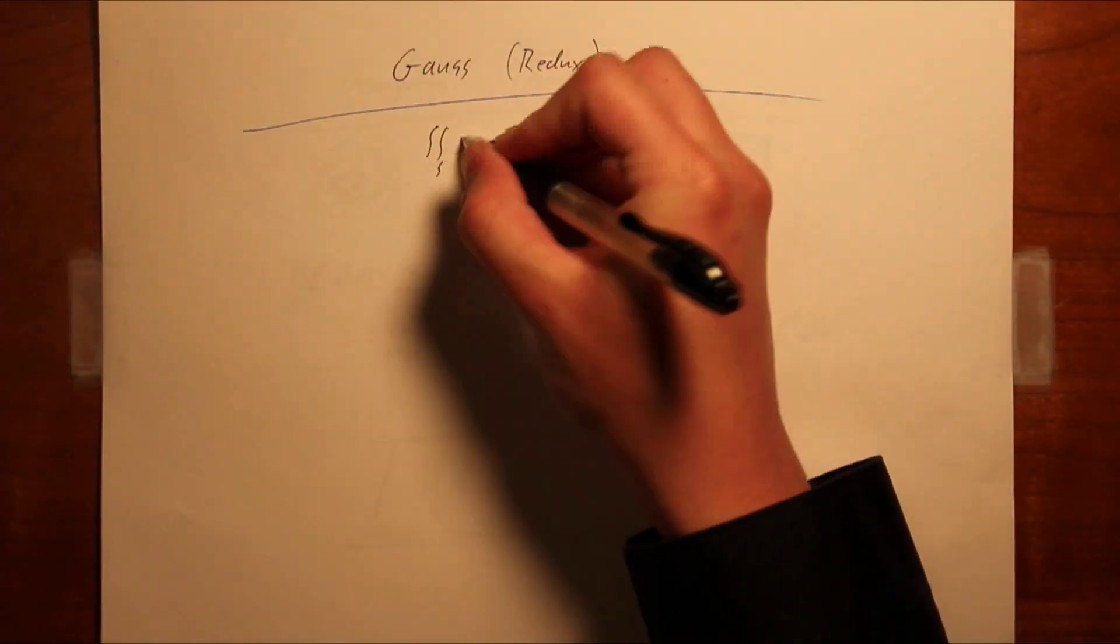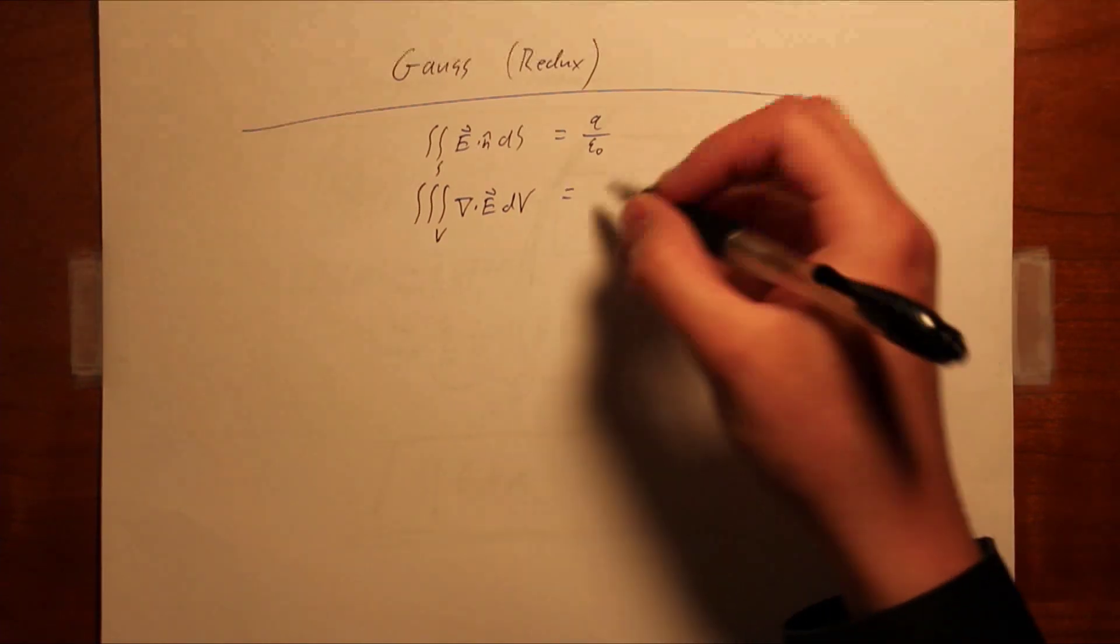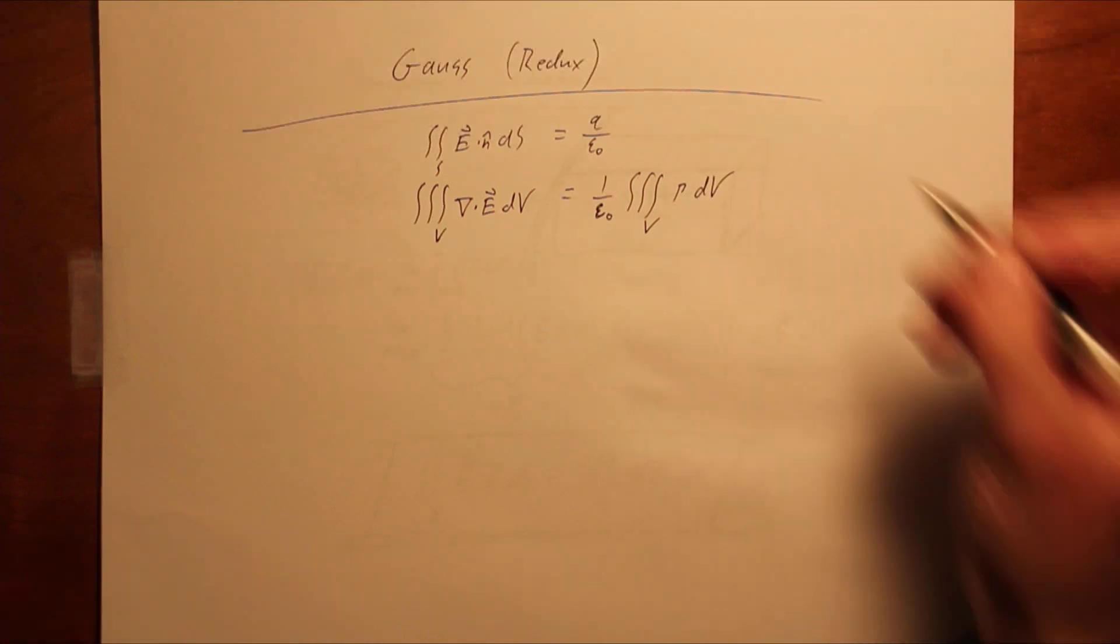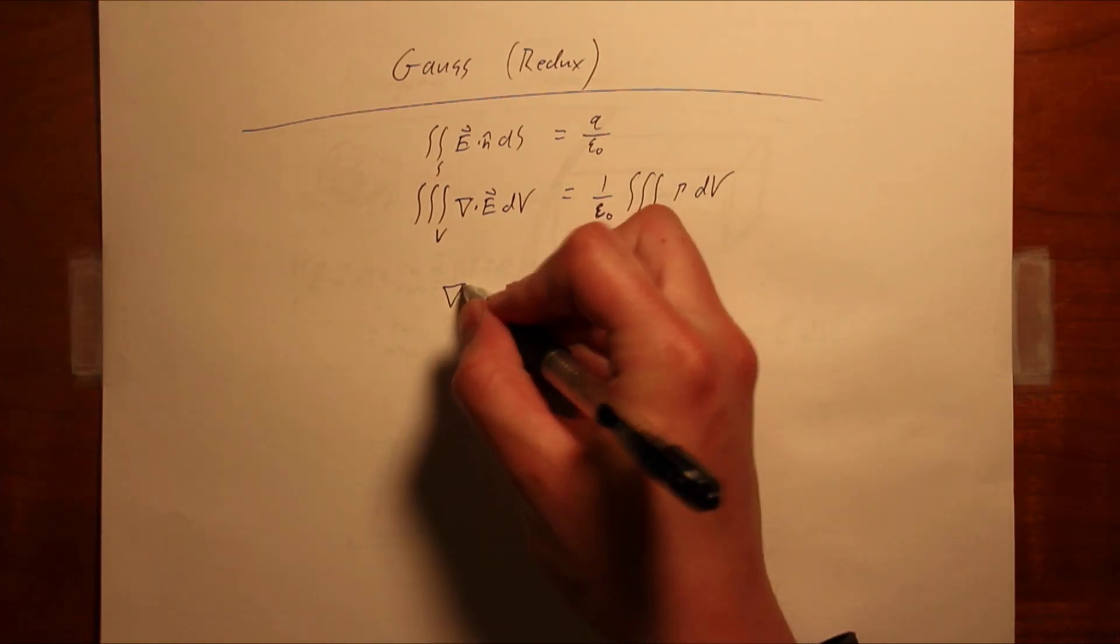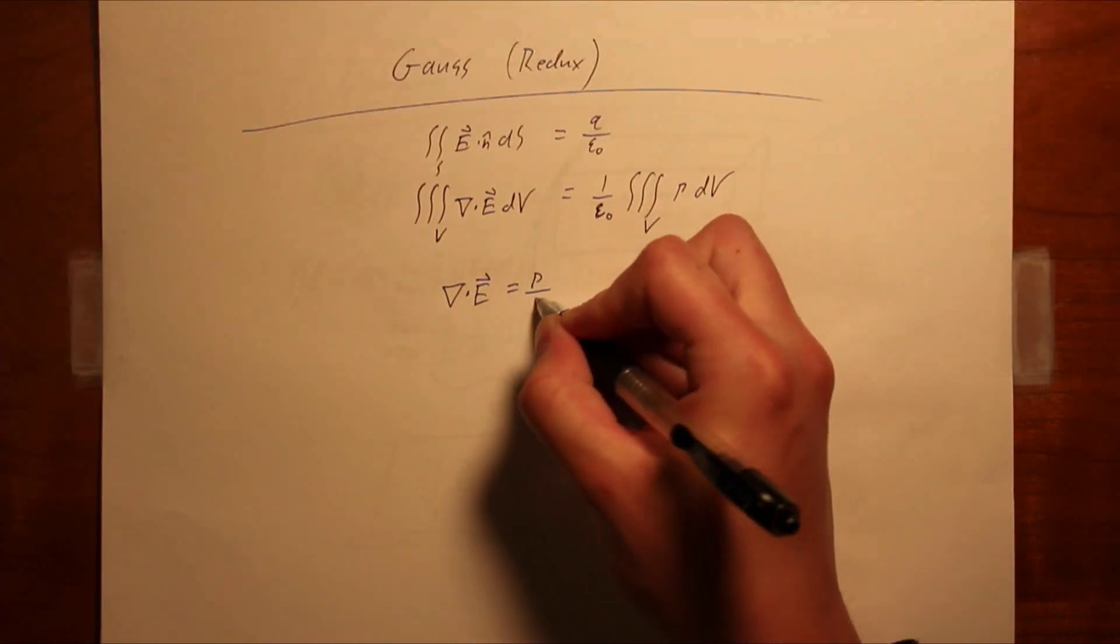The divergence theorem can be applied to the surface integral in Gauss's law. The right-hand side of Gauss's law can also be converted into a triple integral by considering the charge to be the integral of charge density over volume. Normally, there is not much additional information to be found in the equivalence of two triple integrals. The two quantities may only be the same for some specific set of volumes. But we know that Gauss's law, from which we derive this expression, must hold for all surfaces, and thus all volumes. The only way this can be true is for the integrands in both statements to also be equal. That is, the divergence of the electric field equals the charge density over permittivity.